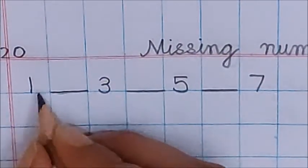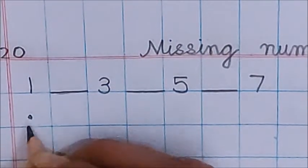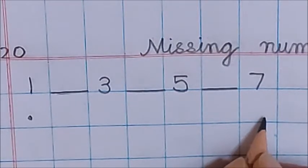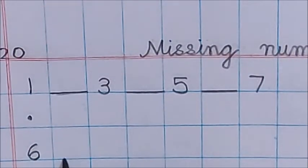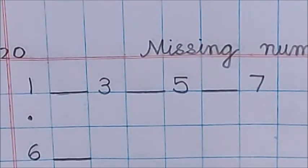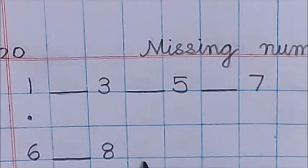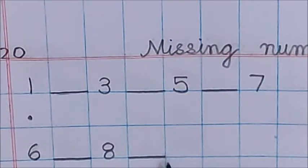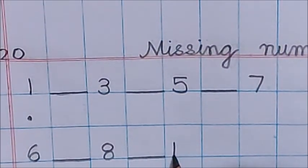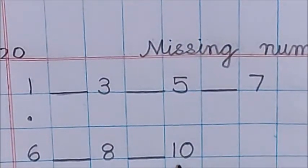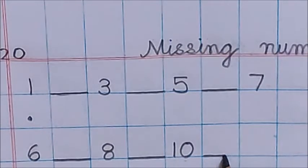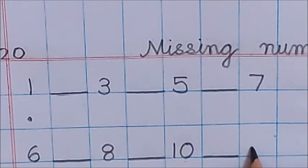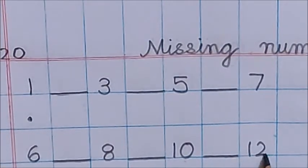Now below one put one dot. In this line we will not write anything. Now below the dot — which means this box — write number six. In the next box put a dash. Then in the next box write down eight. Next box make a dash. In the next box write ten — one and zero are both in the same box. Now in the next box make a dash. In the next box write twelve. Done children.